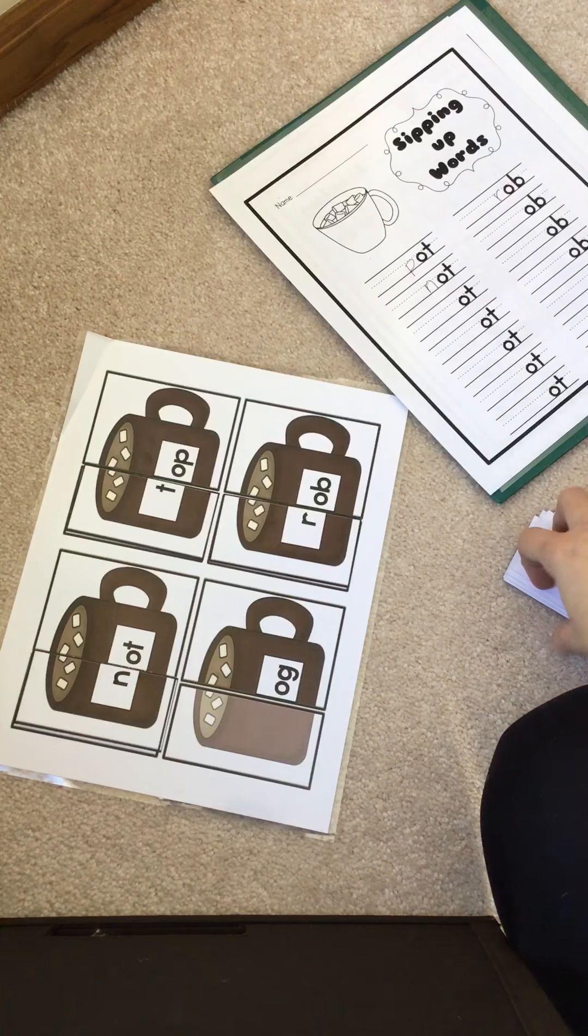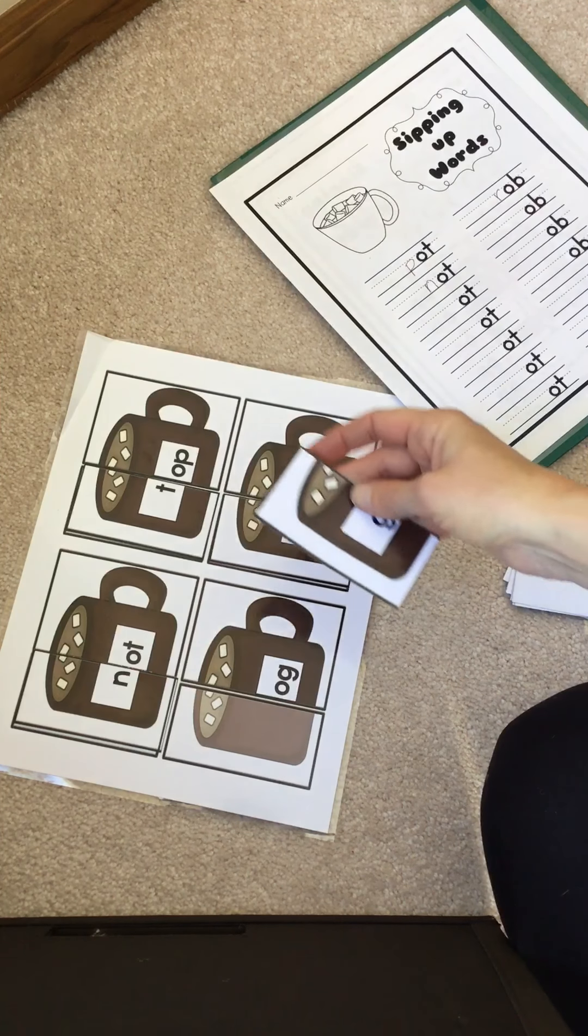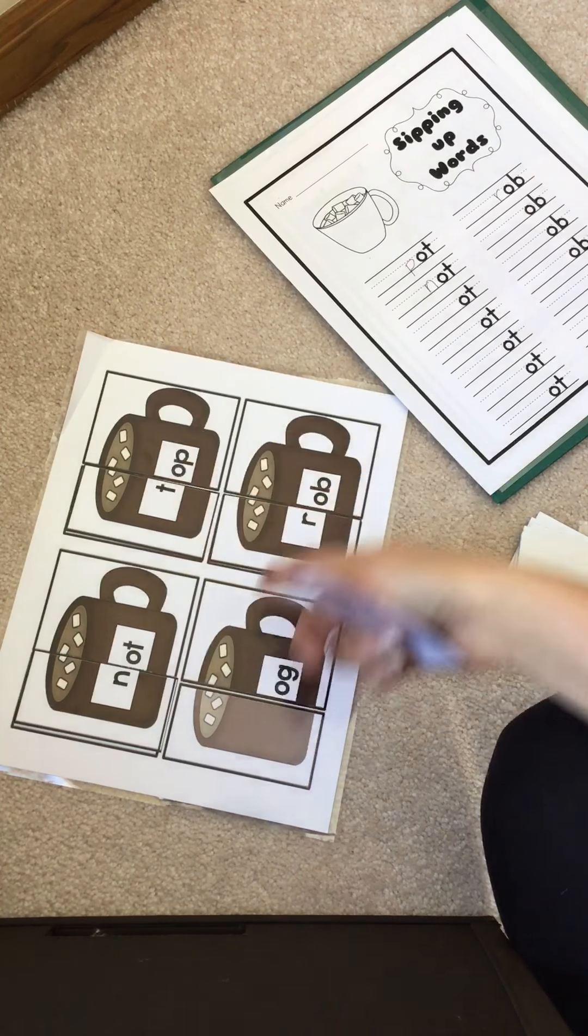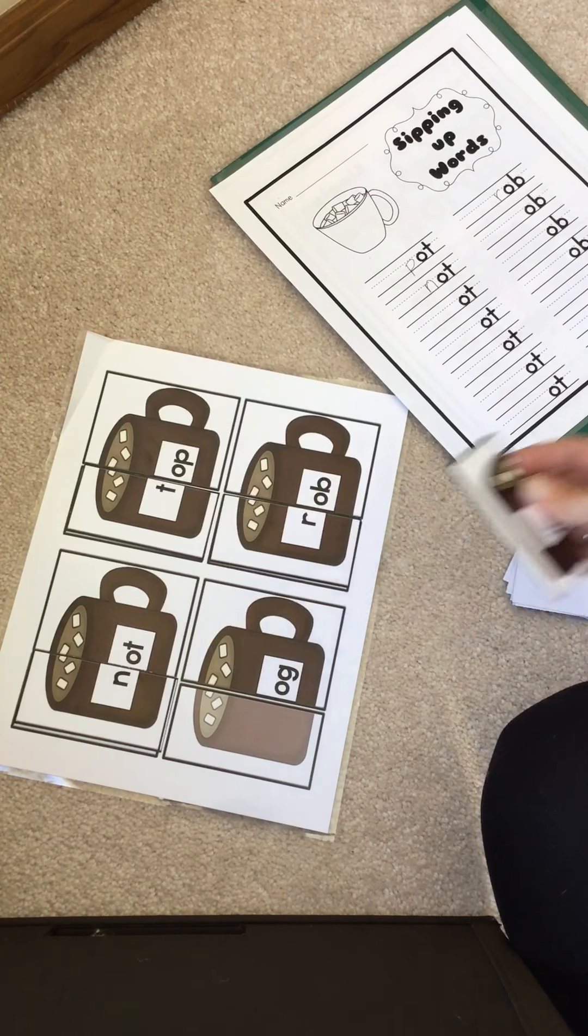So do you see how I just kind of put one somewhere and try it out? And if it makes a real word, I write it down. If it doesn't, I move it to a different hot cocoa mug until it makes a real word.